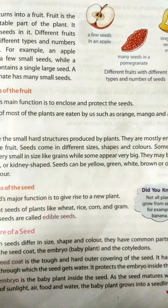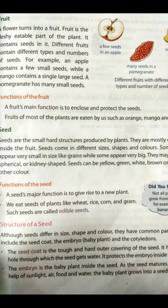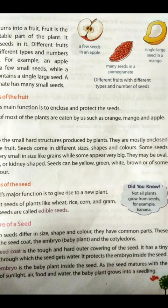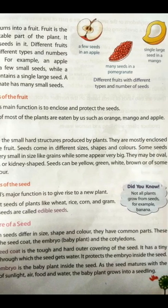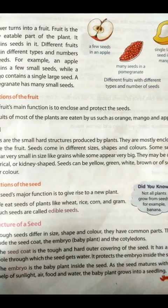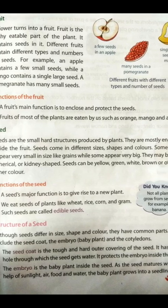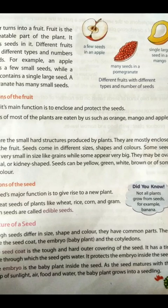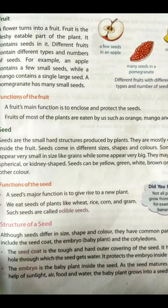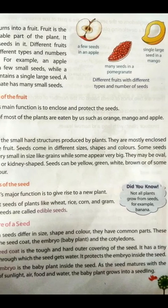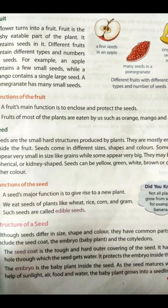The seed coat is the tough and hard outer covering of the seed. It has a tiny hole through which the seed gets water. It protects the embryo inside the seed. The embryo is the baby plant inside the seed. As the seed matures with the help of sunlight, air, food, and water, the baby plant grows into a seedling.